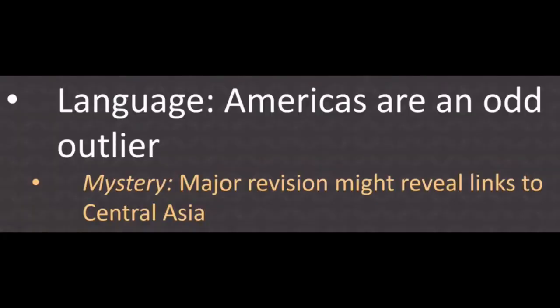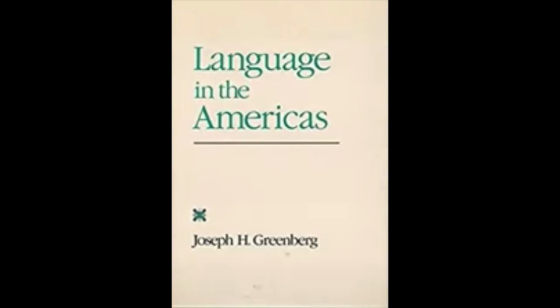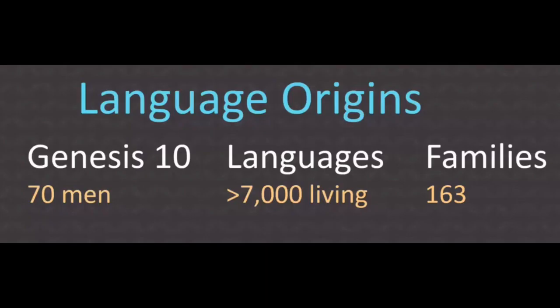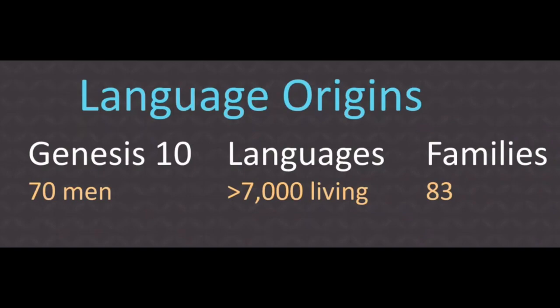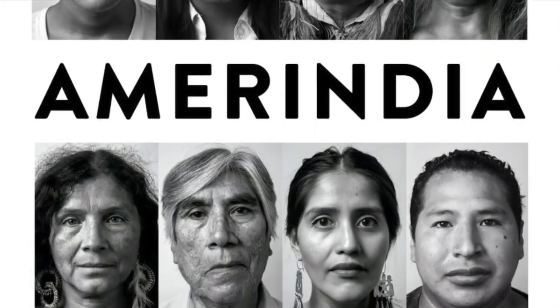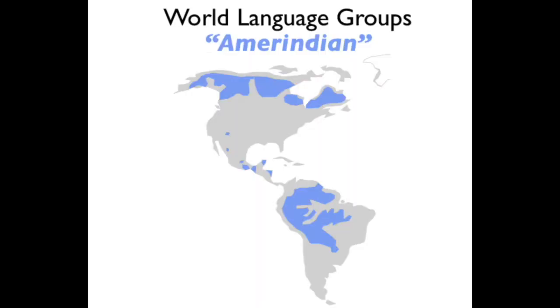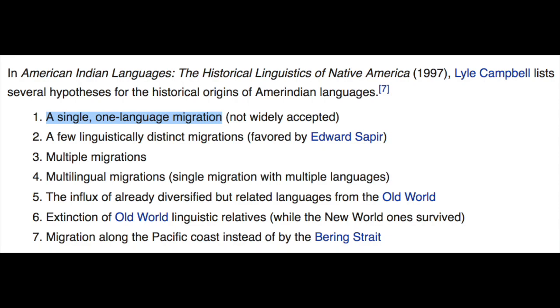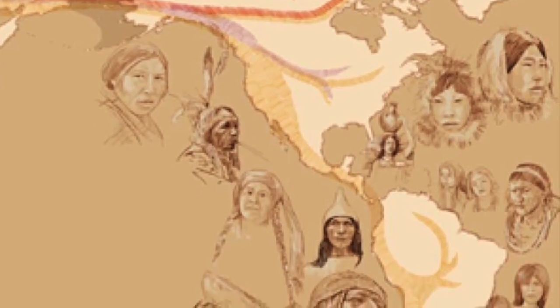Another way to tell is language. Diachronic linguist Joseph Greenberg discovered that the presumed 163 language families of today is actually much lower — just 83, or maybe less. This falls in line with Genesis 10, which tells us of the Babel dispersion of languages, which would be around 70. The language family of Native Americans fell within the high-level linguistic Amerind family, combining all indigenous people of South America, North America, Alaska, and Greenland. You find the same conclusion in the book The Historical Linguistics of Native Americans, written in 1997, where Lyle Campbell listed hypotheses of the historical origins of the Amerindian language families, with the first agreeing with Greenberg's — that a single one-language migration event is the best and most obvious.